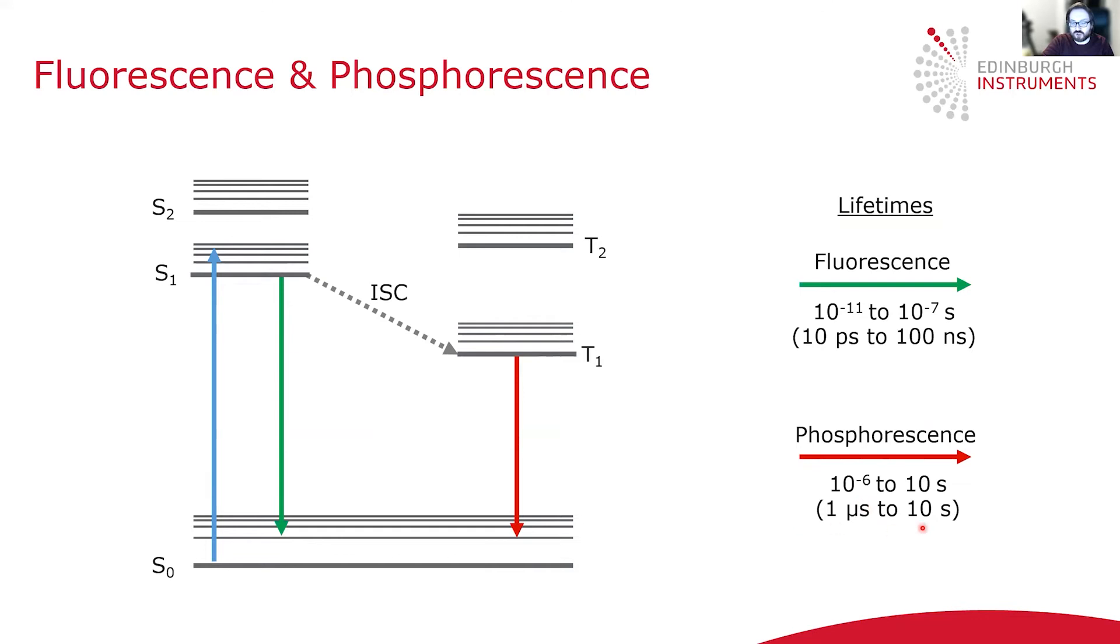Phosphorescence occurs on a longer time scale, typically having a lifetime in the one microsecond to 10 seconds region. This is because it's a forbidden transition, breaking conservation of angular momentum, and so phosphorescence occurs on a longer time scale, it's a slower transition.